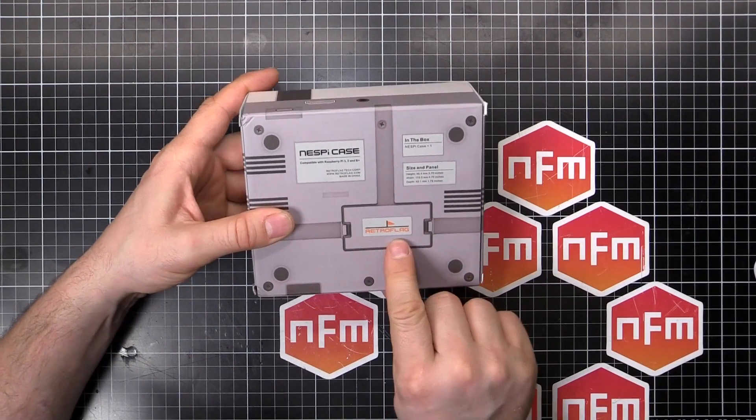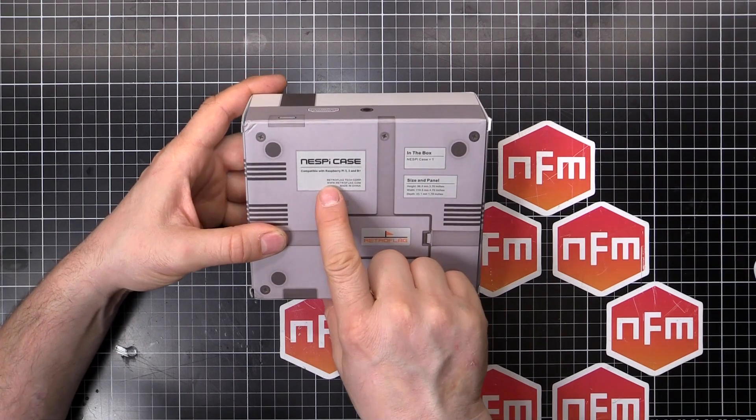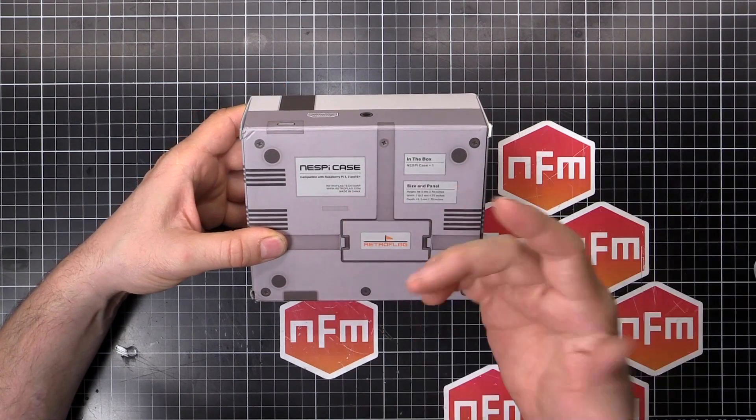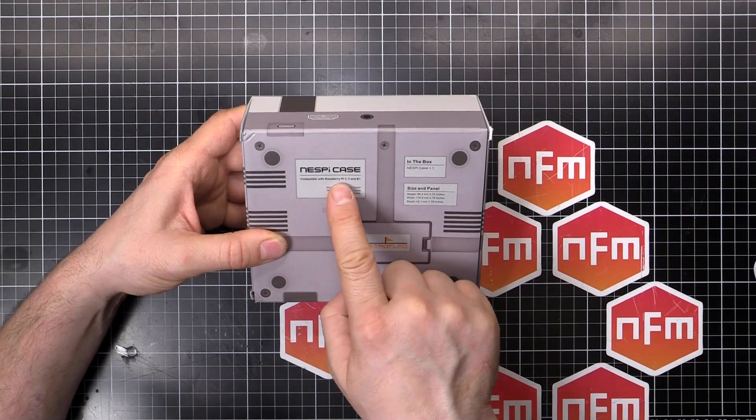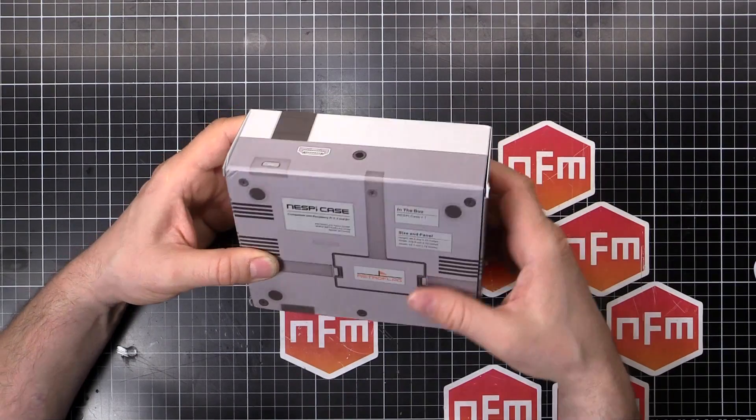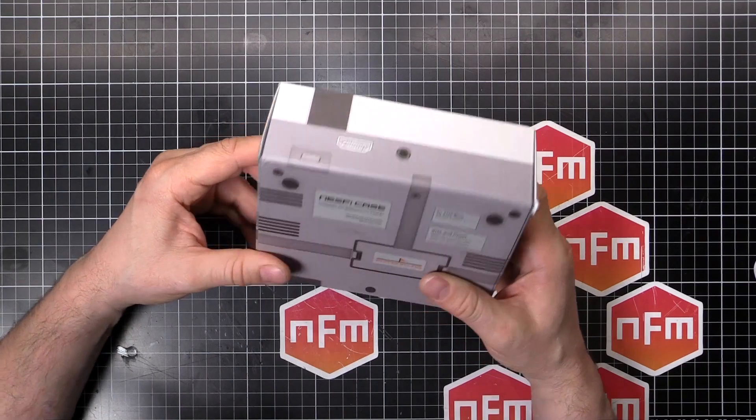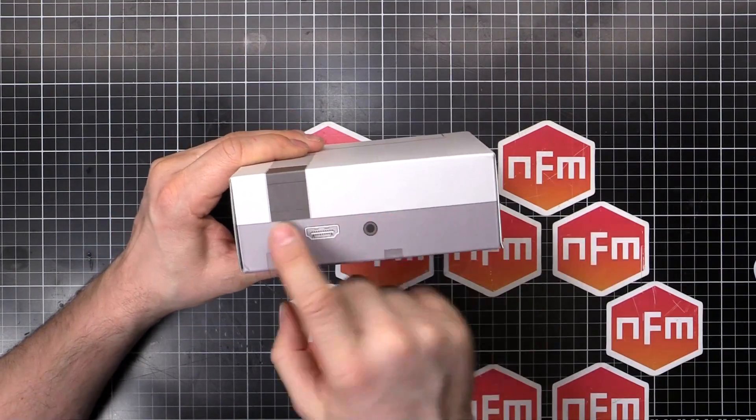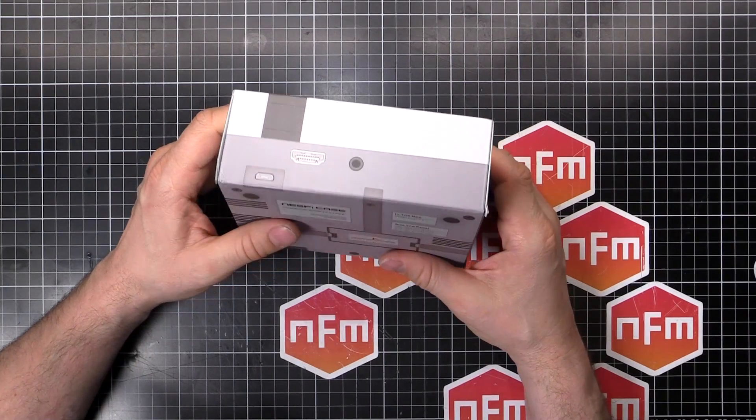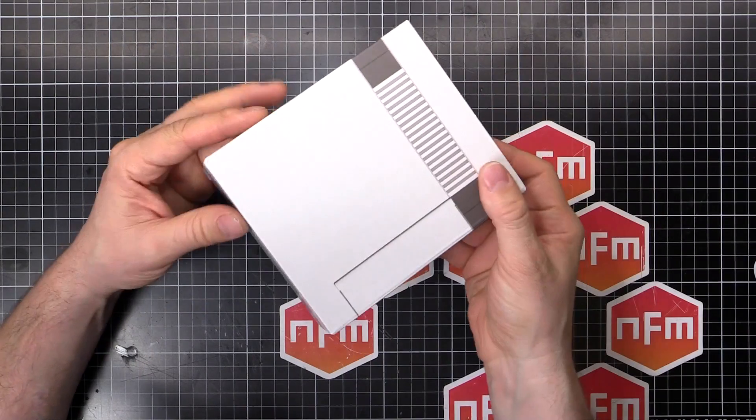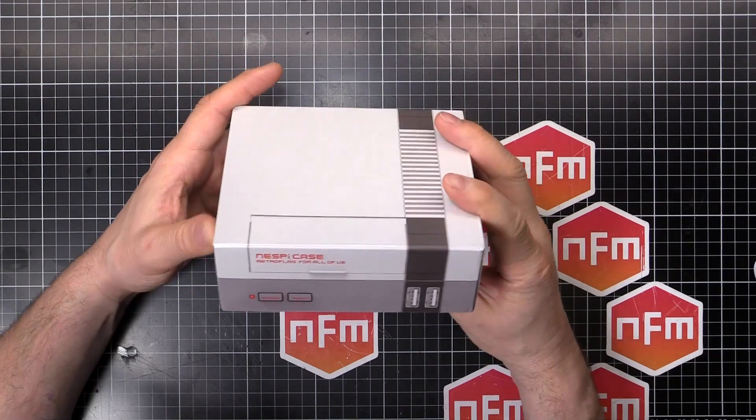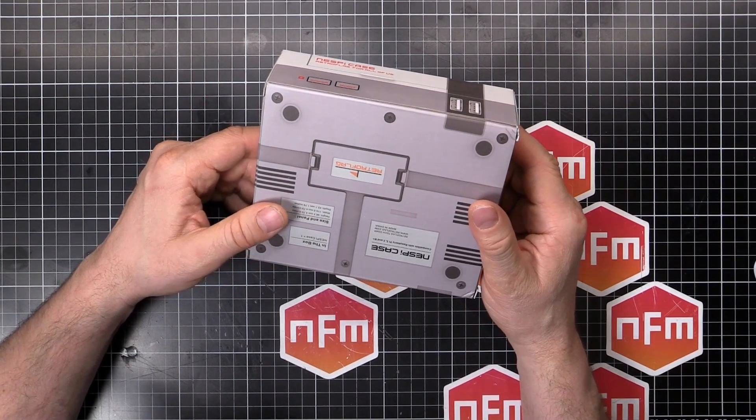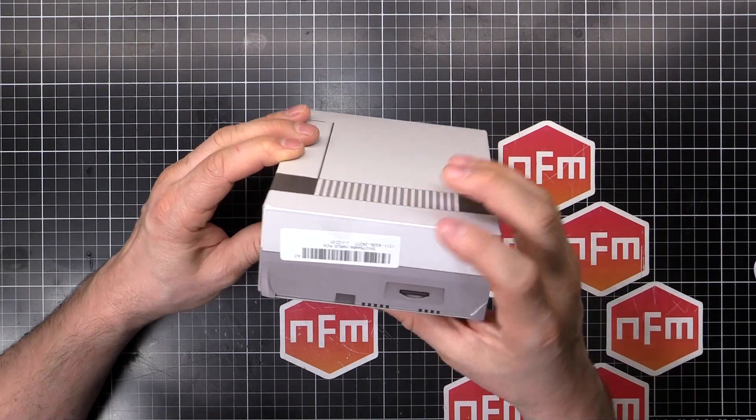It's made by RetroFlag. Their URL is www.retroflag.com. Compatible with Raspberry Pi 3, 2 and B+. So it's compatible with the standard size Raspberry Pis, not the Raspberry Pi Zero. I'm sure you could hack that in there, but the ports probably won't line up anyway. So yeah, it's mainly designed for the standard sized Raspberry Pis. So let's pull this thing open and see what it looks like inside.